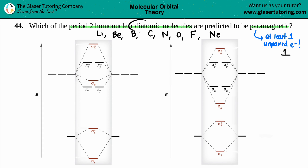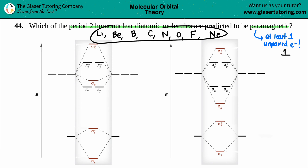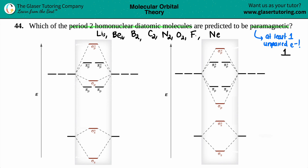These are specifically talking about diatomic molecules, so for all of these I have to put two of them together. I'm looking at whether Li₂, Be₂, B₂, C₂, N₂, F₂ are paramagnetic, and as we get the answers I'll highlight them.